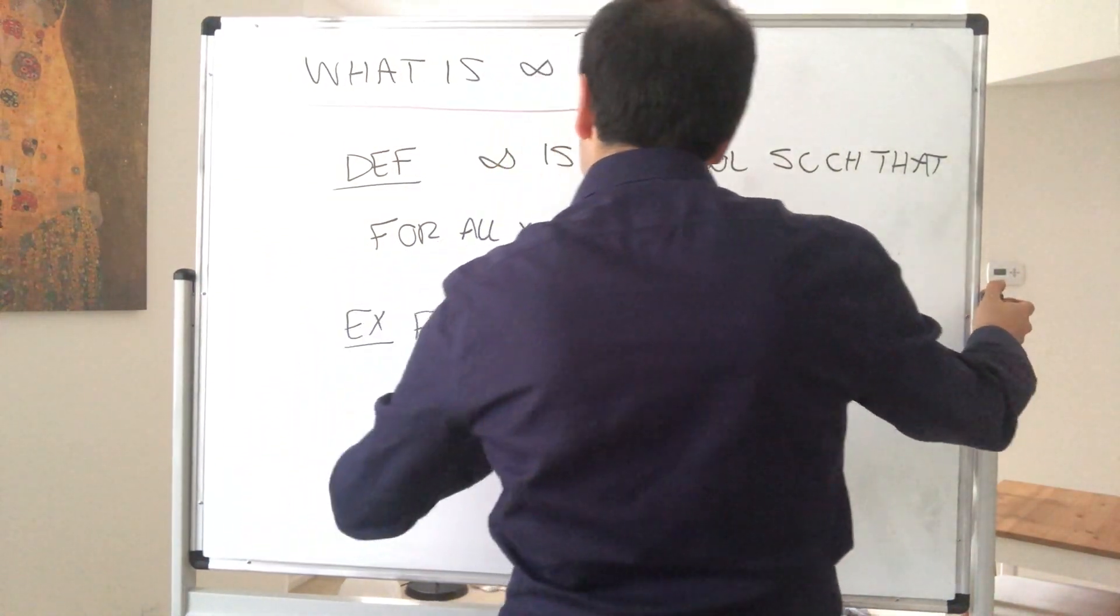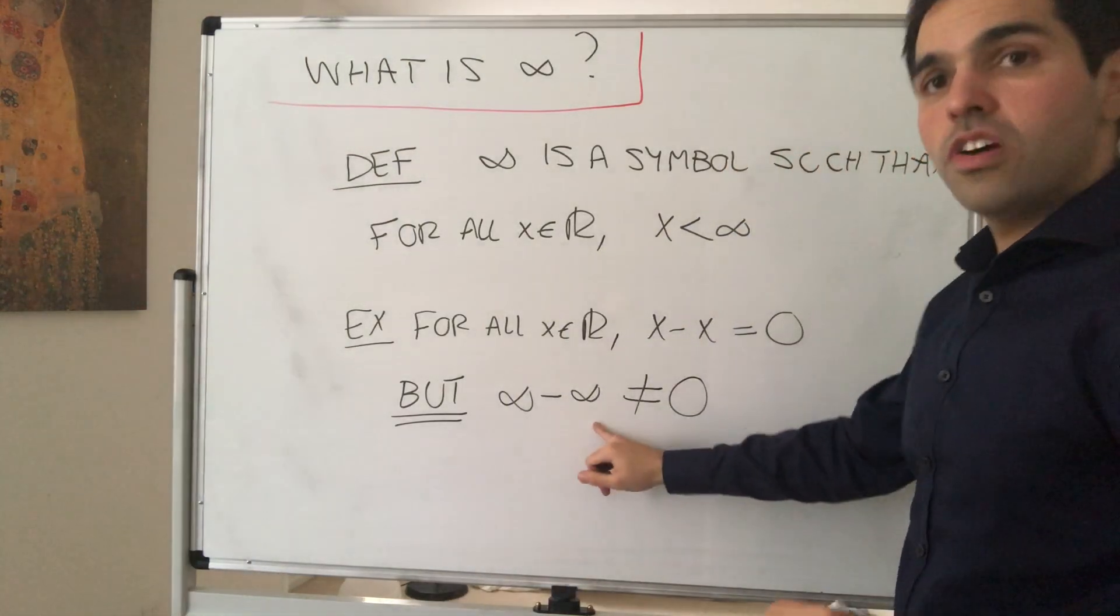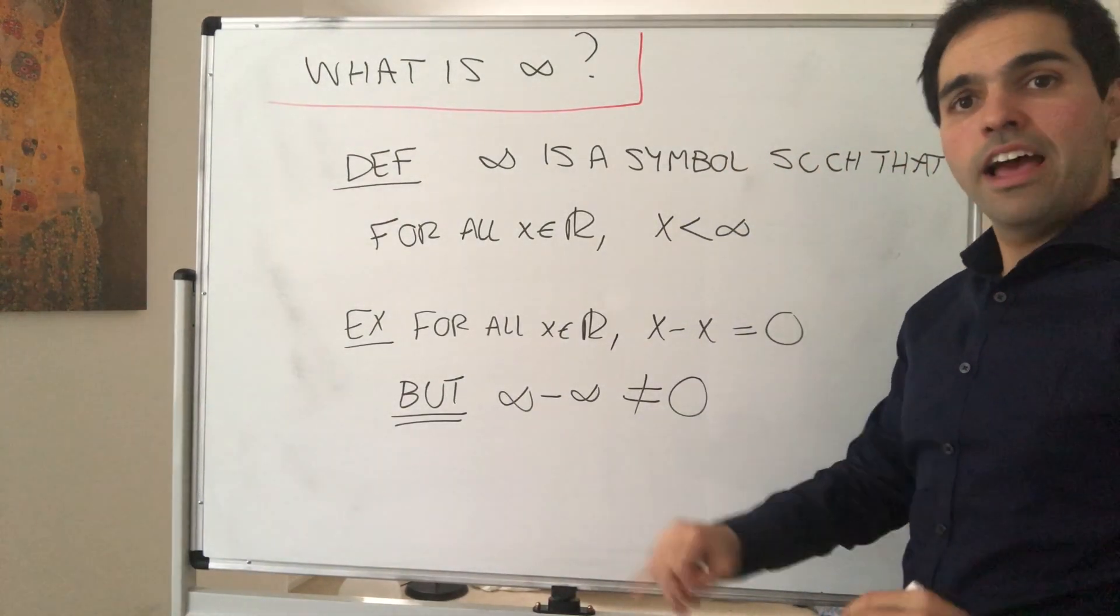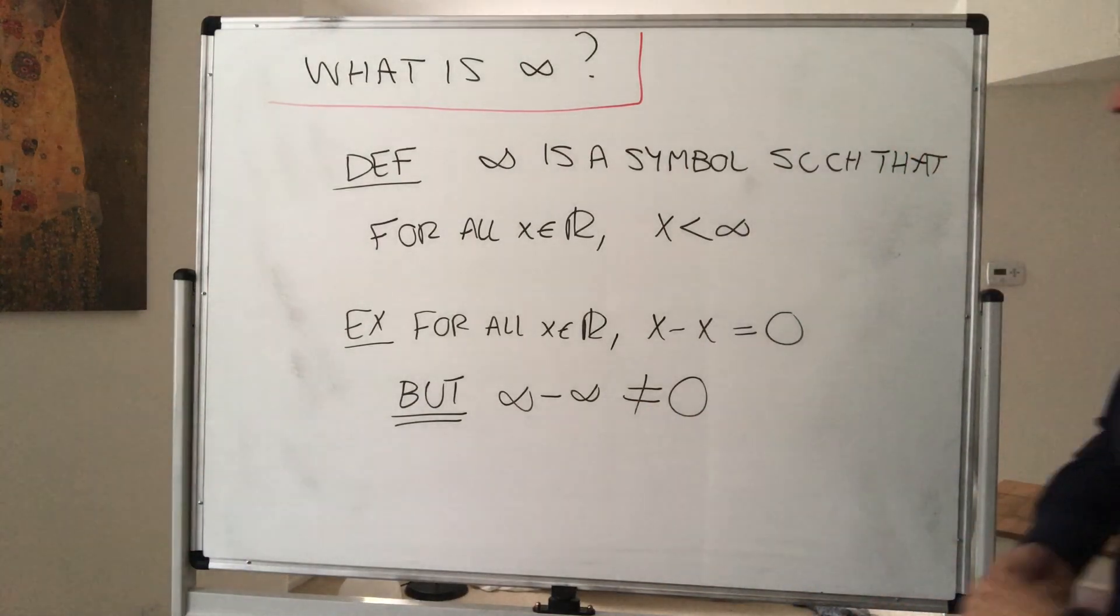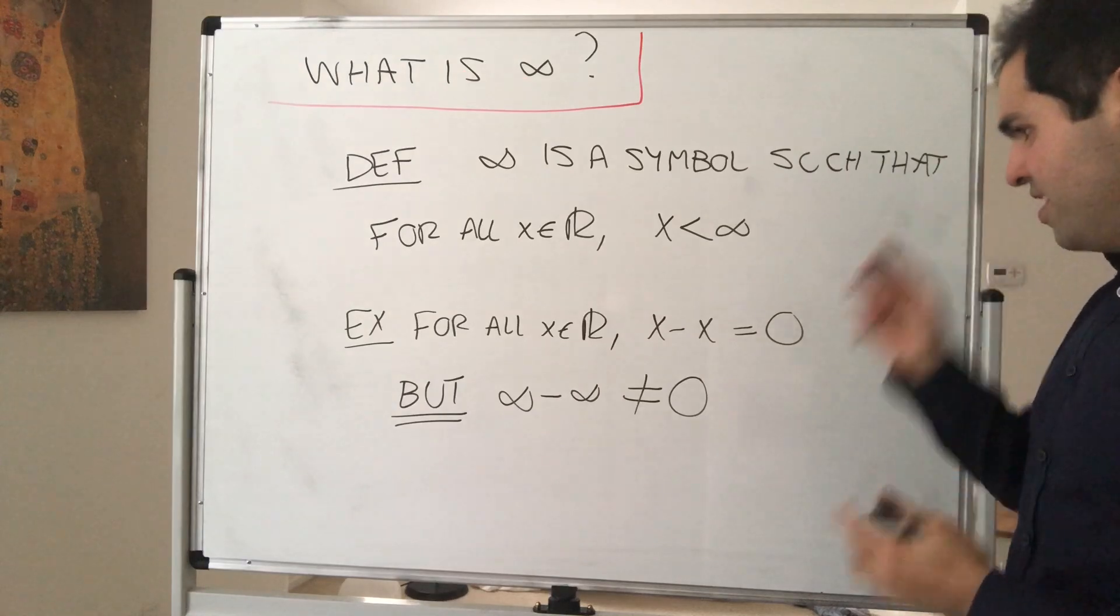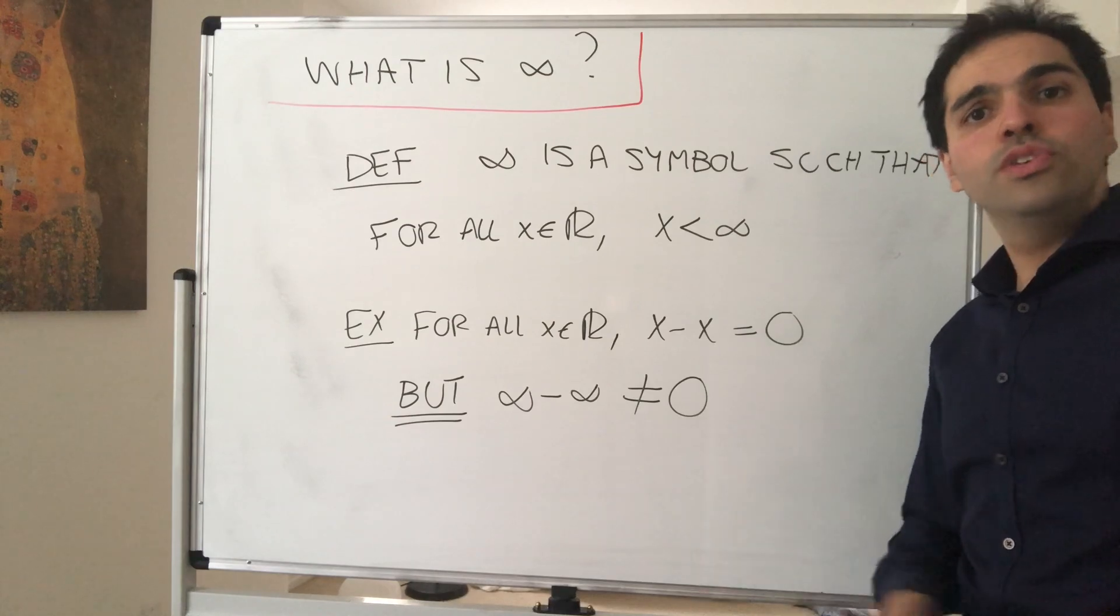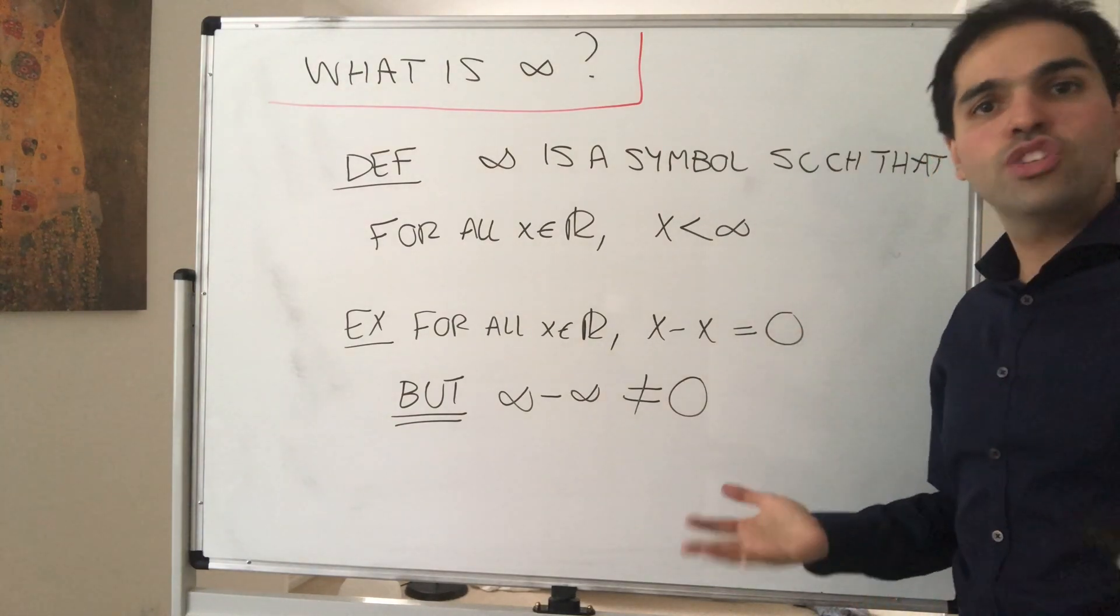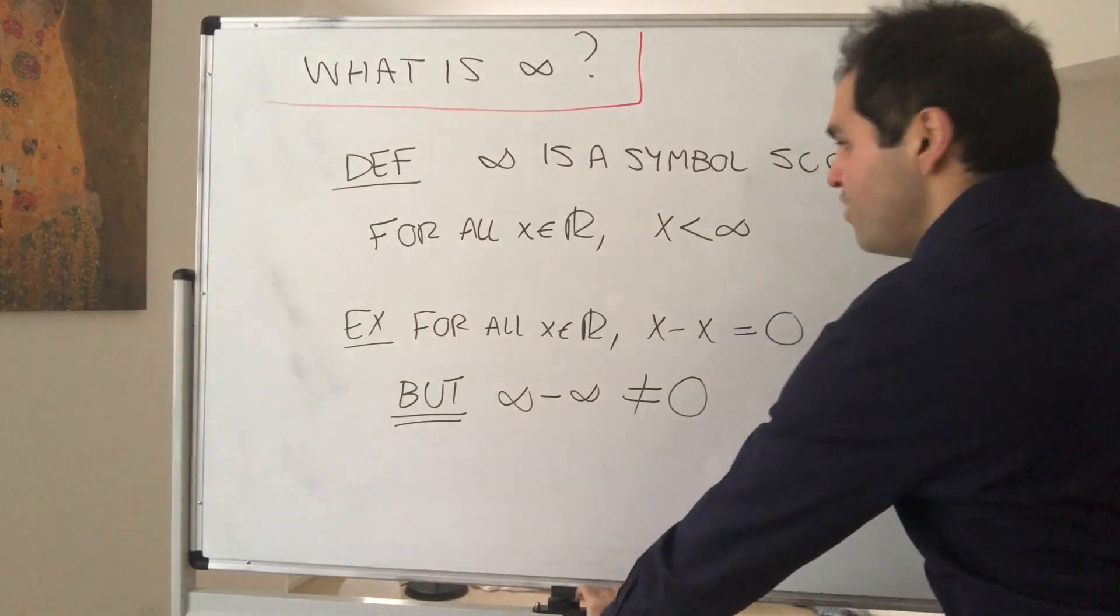But this is not true for infinity. Infinity minus infinity is not always zero. That's what's called an indeterminate form, and there's a nice video on that if you're curious. So again, infinity is not a real number, yet it is still useful for instance to extend our definition of sup to unbounded sets.